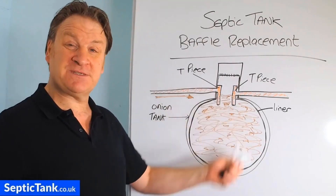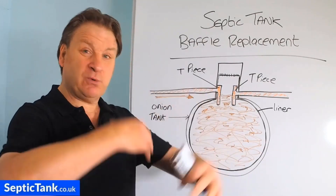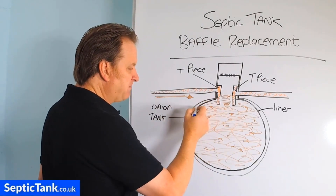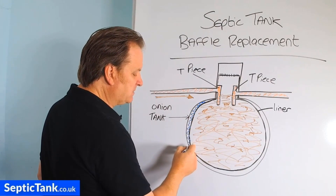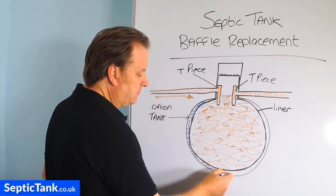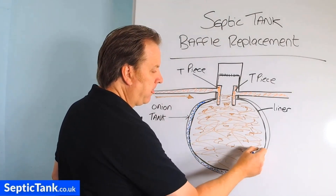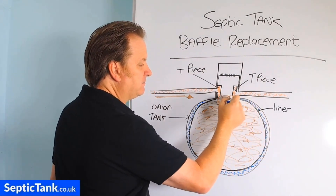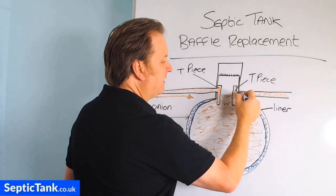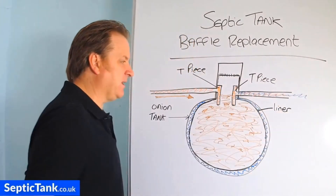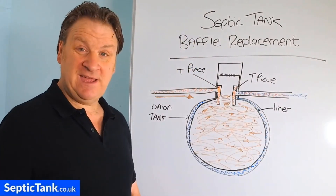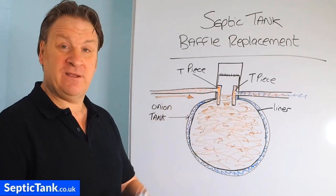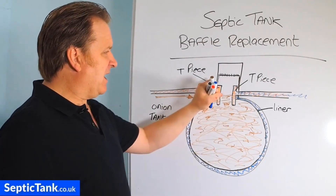A baffle basically means a partition, a divide, or a separator that separates the liquid from the solids. When all the wastewater comes into the tank it swirls around in a current, and then through this baffle it gets separated — the wastewater goes on the inside of the liner, comes up, enters the pipe, and is discharged into the soak away. That's basically how an onion tank baffle liner works.